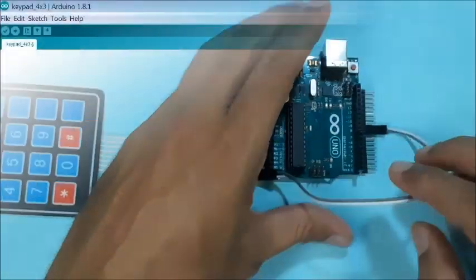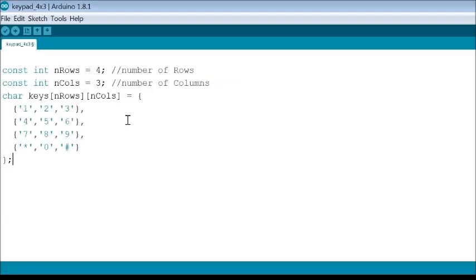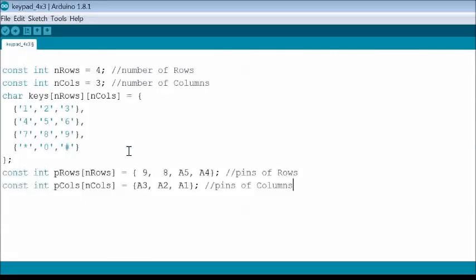Then, open Arduino IDE and declare the number of rows as 4 and columns as 3 of keypad. Then, declare the key values in an array by matching the text on the buttons. Then, assign the Arduino pin connections for rows and columns.